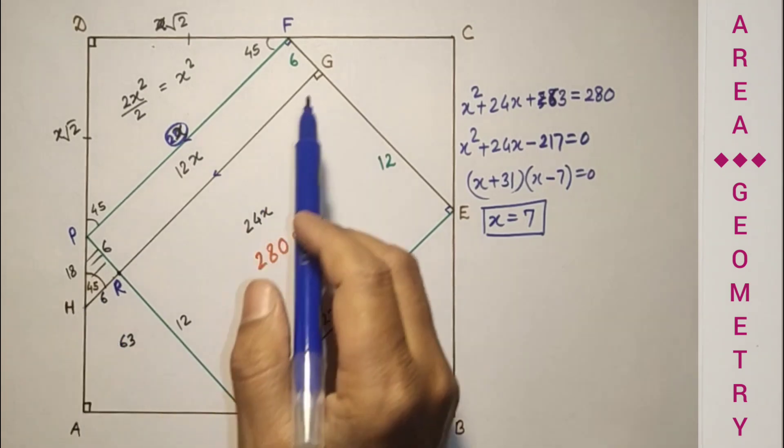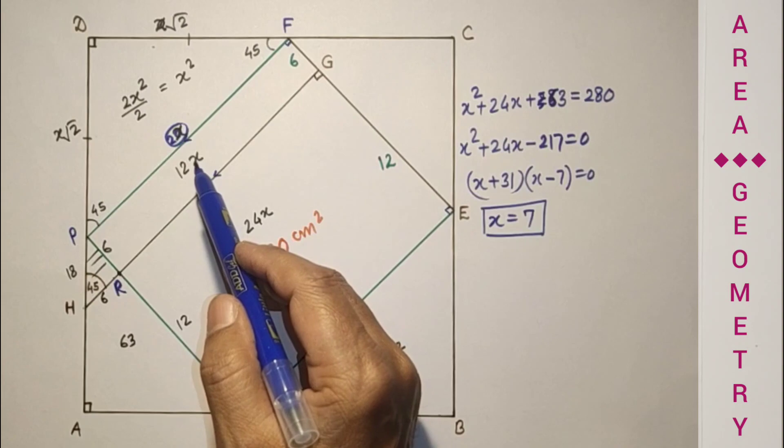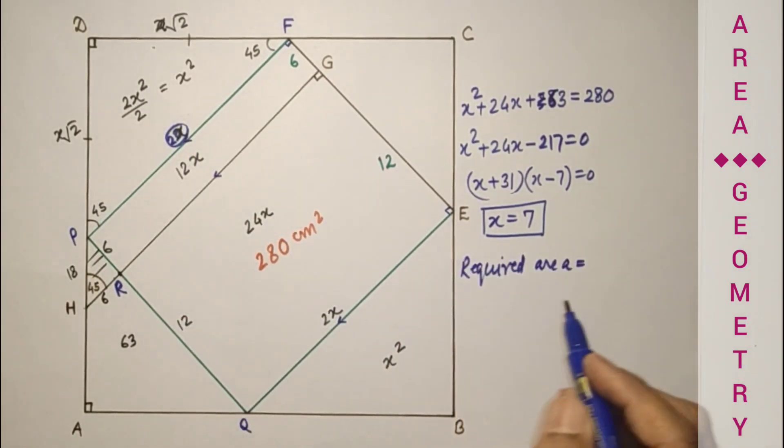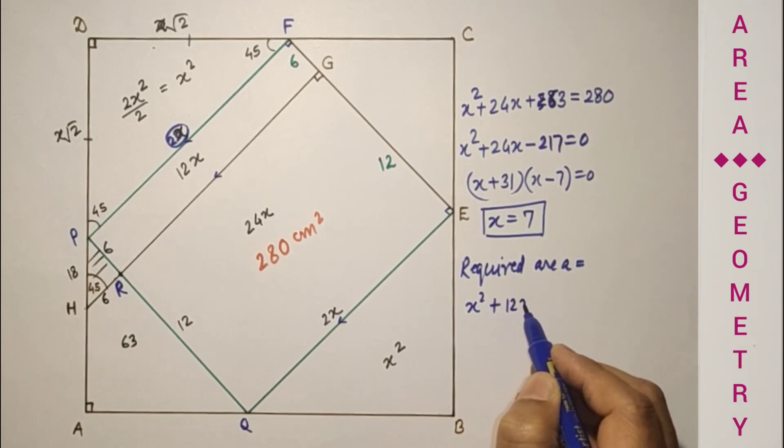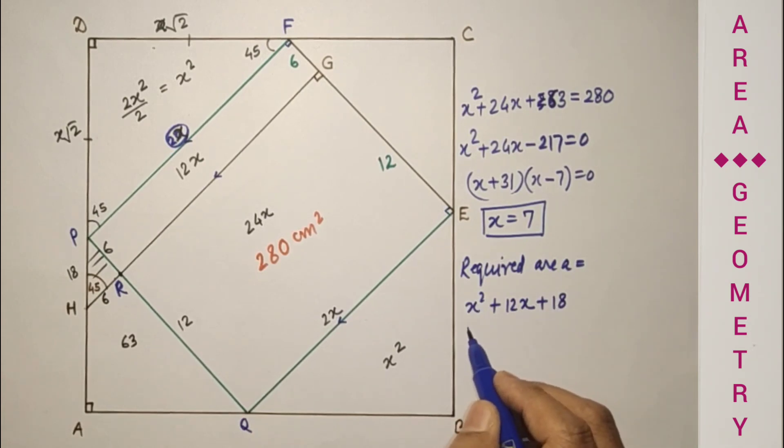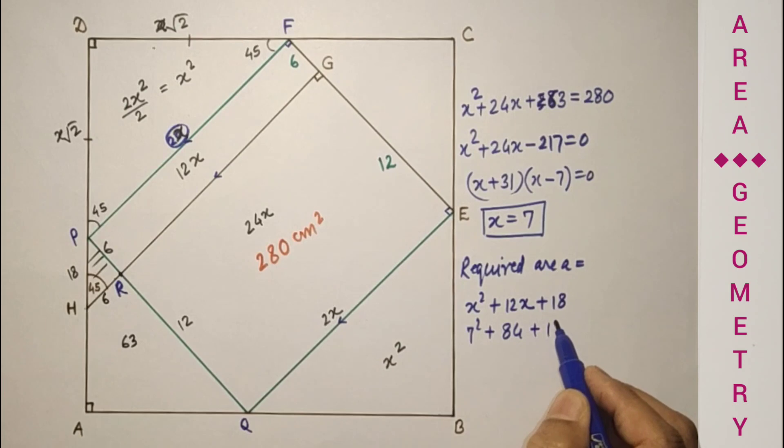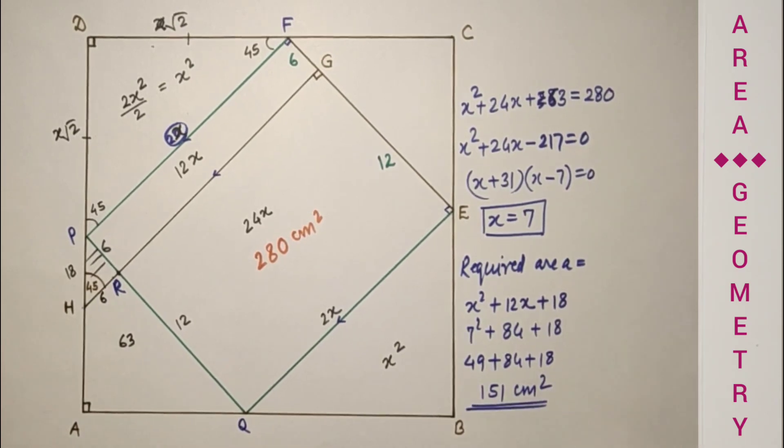And the required area is HGFD. So 18 plus 12X plus X square plus 18. Substitute the value of X as 7. 7 square plus 12 into 7 is 84, plus 18. So this will be 151 centimeter square.